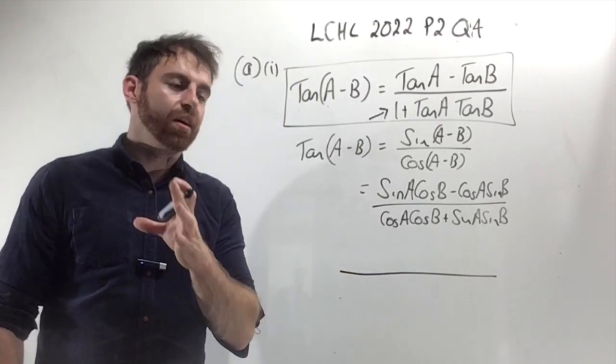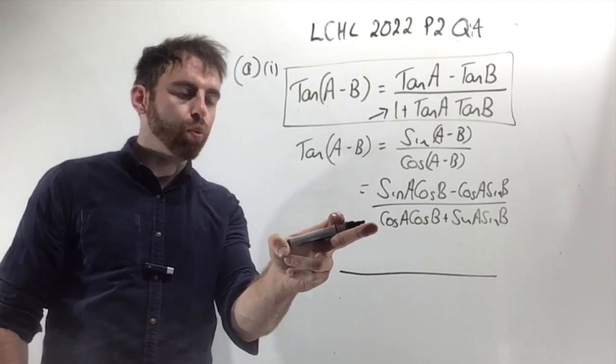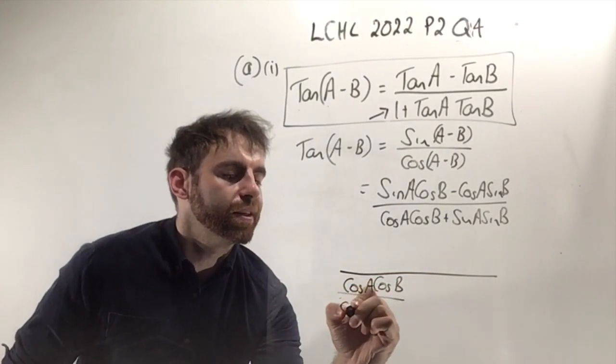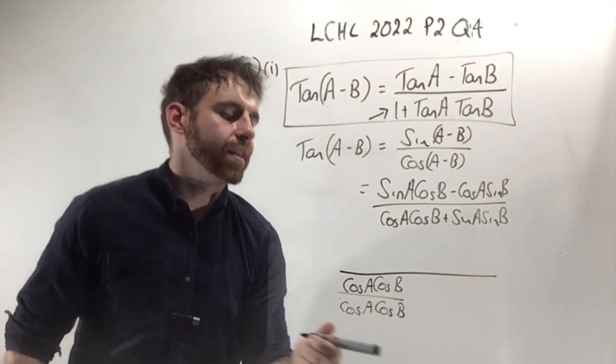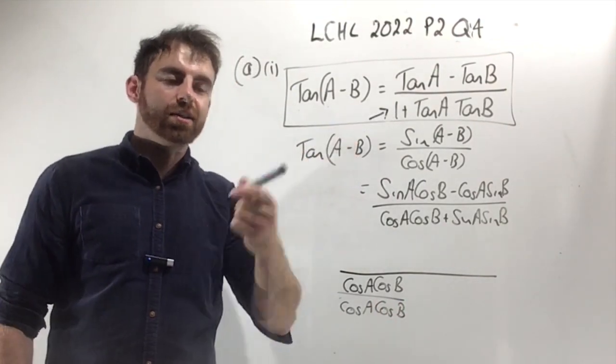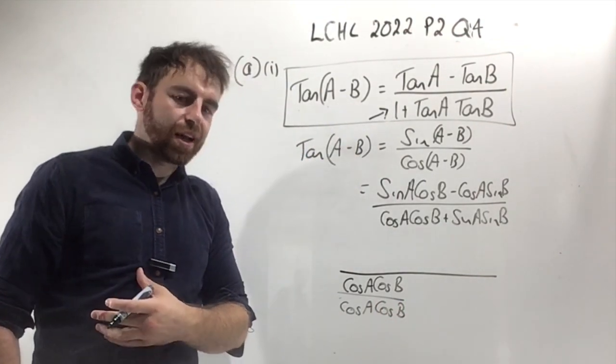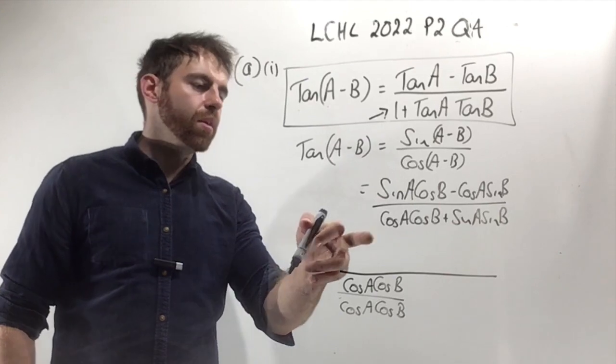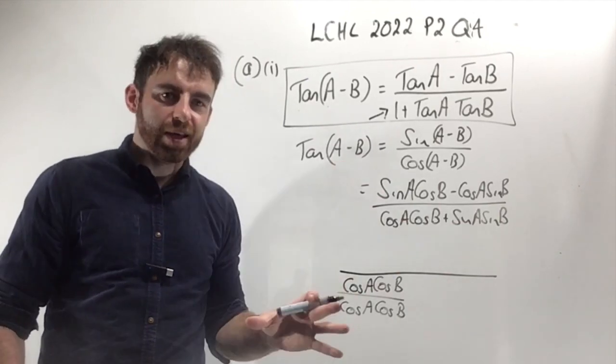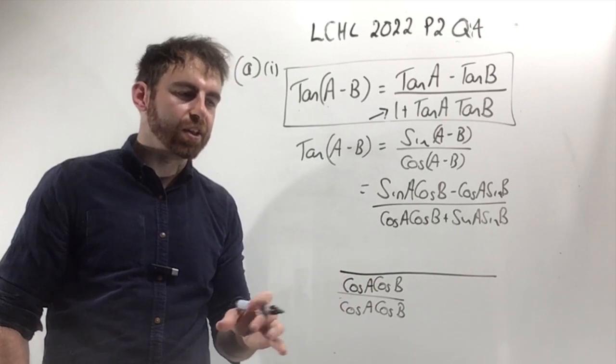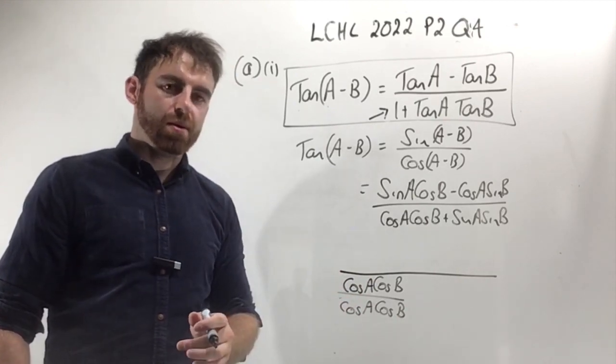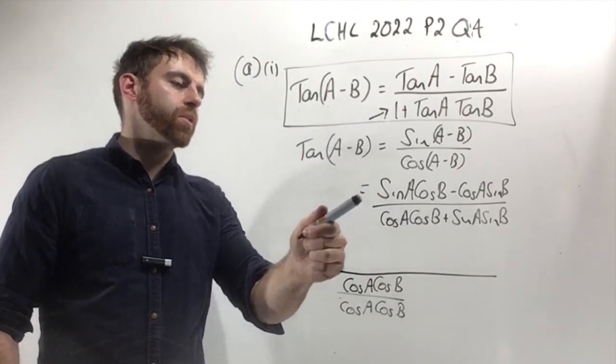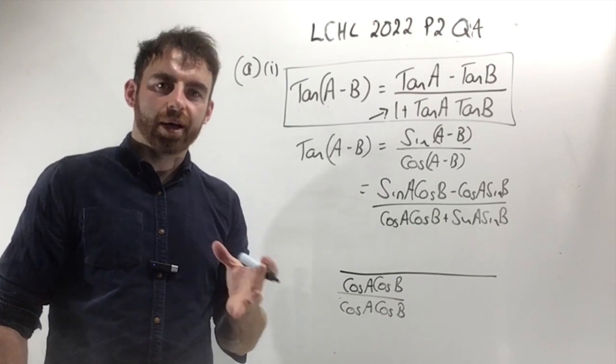Rather than learning that off, that's the logic I'd follow in the exam. I know this term has to become 1, so I'm going to divide it by itself. Cos A cos B divided by itself is going to turn into 1. Now obviously you can't just randomly divide one term by cos A cos B. In order to be equally fair, I have to divide everything by cos A cos B.